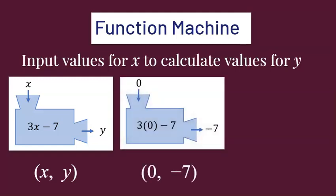Let's try putting in a 0. Notice the x in the expression is changed to a 0 because 3 is multiplied by the x, and then subtract 7 to get the output negative 7. The ordered pair (0, −7) means the input was 0 and the output was negative 7.